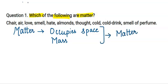From the above examples we can see that chair occupies space and has mass, so chair is matter. Air occupies space and has mass, so it is also matter.